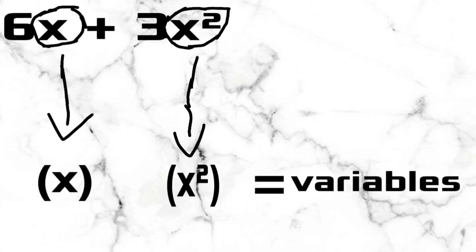Moving on, we will now determine the GCF of the variables. To determine the GCF of the variables, we simply have to find the term with the least exponent.